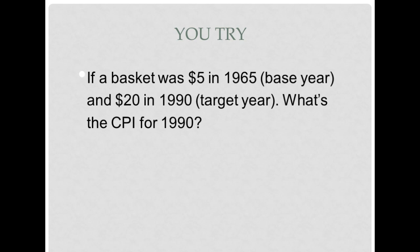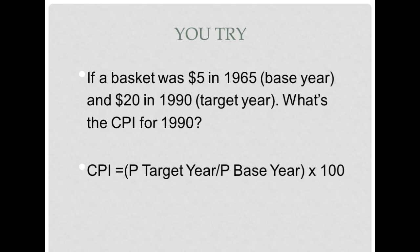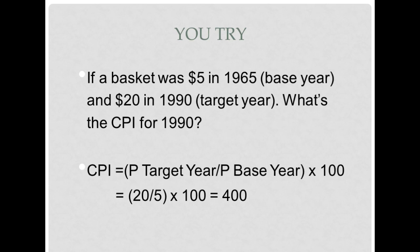Now try calculating the CPI yourself. If a basket was $5 in 1965 (base year) and $20 in 1990 (target year), what is the CPI for 1990? Using the formula: CPI = ($20 ÷ $5) × 100 = 400. Inflation went from a baseline of 100 up to 400 — a 400% increase. That's how we calculate the CPI, and now we have two calculations: the value of a basket and the CPI.